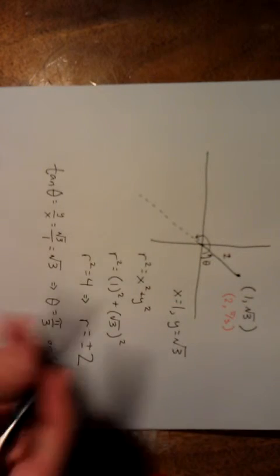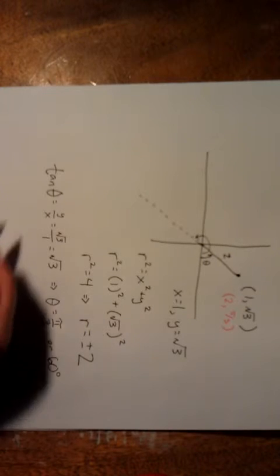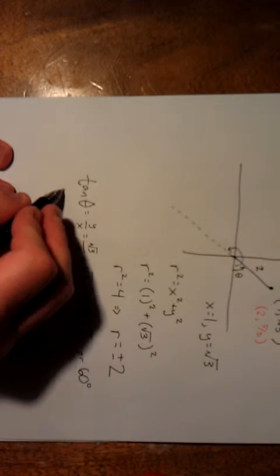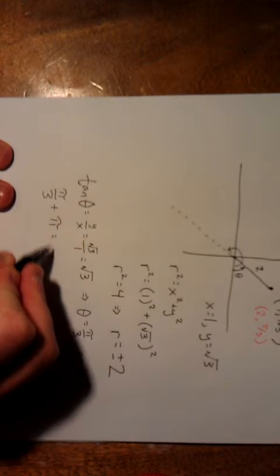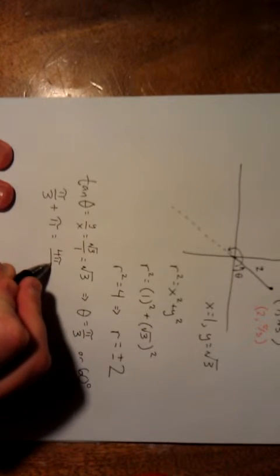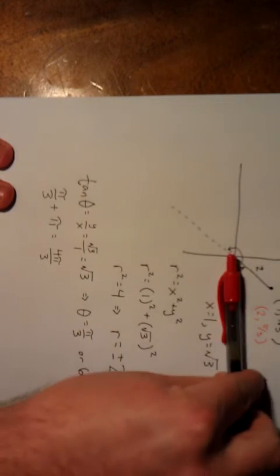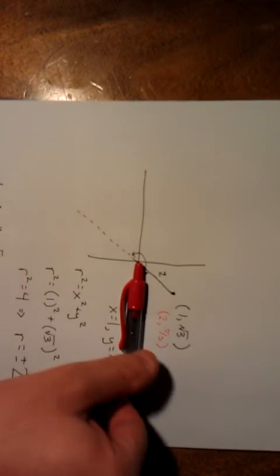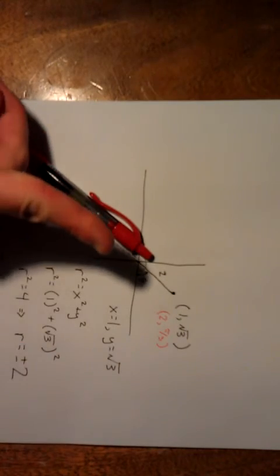We said that another possibility was to rotate ourselves into quadrant 3 and then start walking backwards. Well what would that angle look like in quadrant 3? Because it forms a straight line, we can take our pi over 3 radians and add a straight angle to that. That would be adding pi to it. That would put us at 4 pi over 3. So another possibility for this angle is we say, starting from the origin, we rotate around, rotate around into quadrant 3, like so, and then we start walking in the backwards direction.